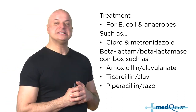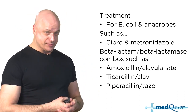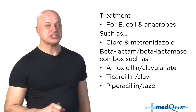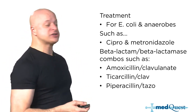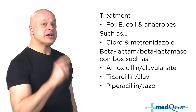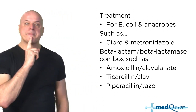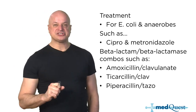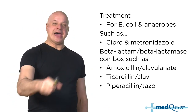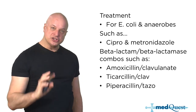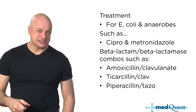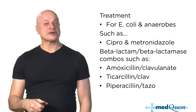Which of these goes into the biliary system the most? Piperacillin. If you want to treat ascending cholangitis or cholecystitis, piperacillin is secreted into the bowel because it's hepatically excreted, which is unusual for most antibiotics.